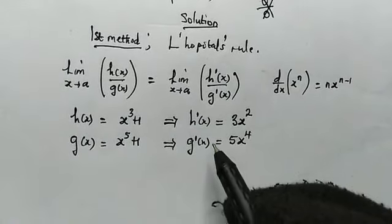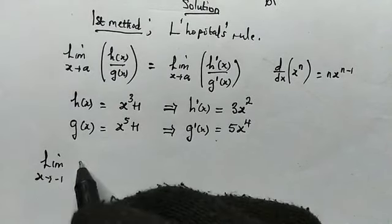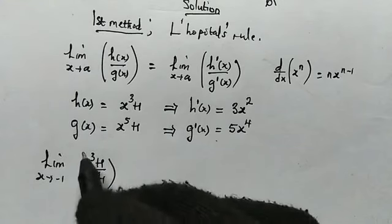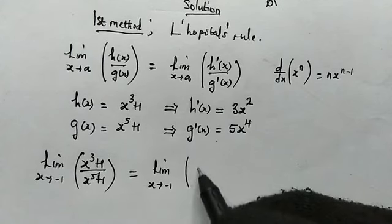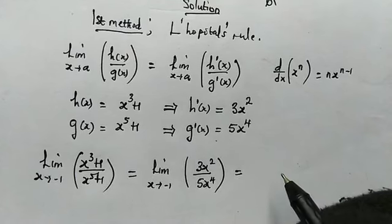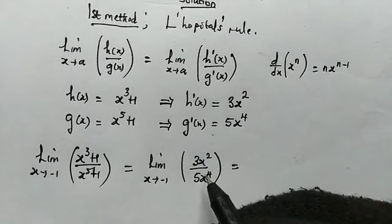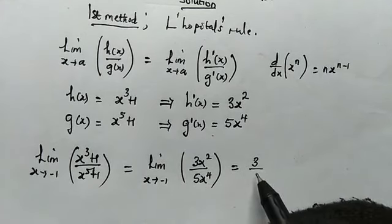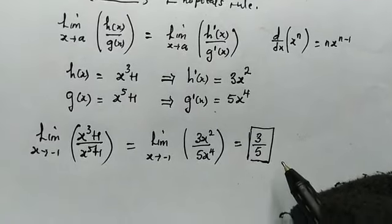With the help of L'Hôpital's rule, the limit as x is approaching negative 1 of x cubed plus 1 divided by x to the power of 5 plus 1 is equal to the limit as x is approaching negative 1 of 3x squared divided by 5x to the power of 4. We are now free to make a direct substitution. Since both powers are even, negative 1 raised to an even power is 1, giving us 3 times 1, which is 3, divided by 5 times 1, which is 5.